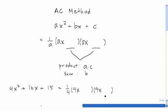Now to fill in these two slots, we need two numbers whose product is equal to a, which is 4, times c, which is 15. And that's equal to 60.